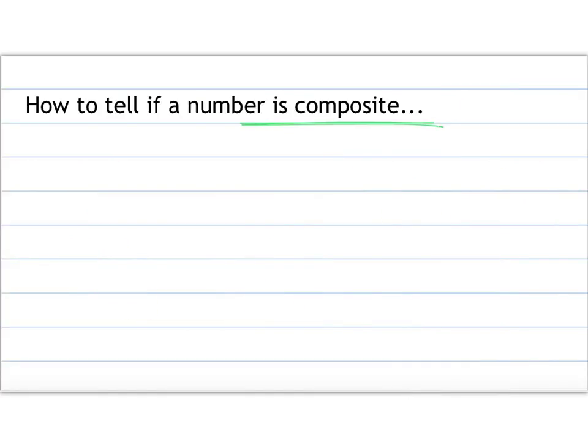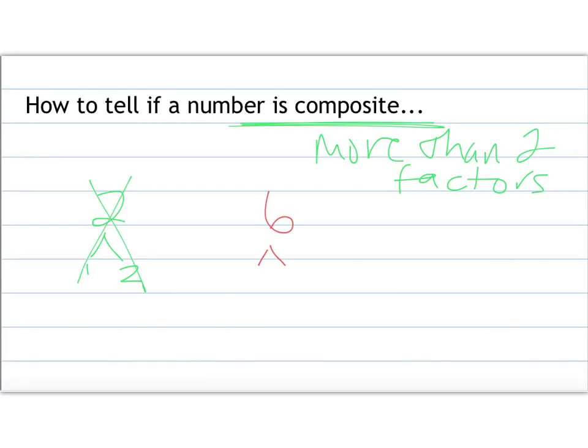So how do we tell if a number is composite? We're looking for its factors. A composite number is going to have more than two factors, so it's going to have more than just one and itself. When I look at the number two, I realize that's one times two, there's nothing else, so that number is prime, it's not composite. Two is actually the only even number that will be prime because any other even number, two can go into, so that's a little fun fact for you. If I try the number six, well six can be one and six, but six can also be two times three, so I notice that I have four total factors, so that's a composite number.